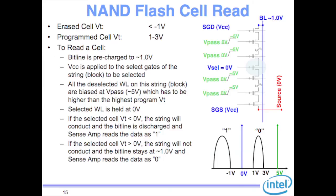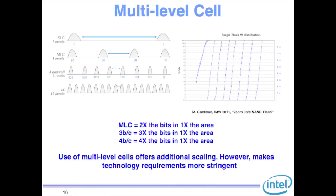In a single-level cell (SLC) you either put electrons or you don't — one bit per cell. You can extrapolate that idea: multi-level cell (MLC) uses four voltage levels instead of two, giving you two bits in effectively the same area and dropping your cost by roughly a factor of two. There are some overheads, so the savings isn't exactly 2x, but it is very large. The tradeoff is that the window between program and erase states shrinks dramatically, affecting both programmability and reliability.